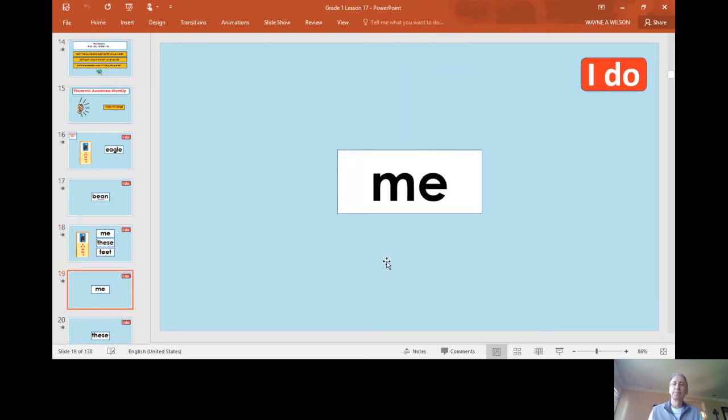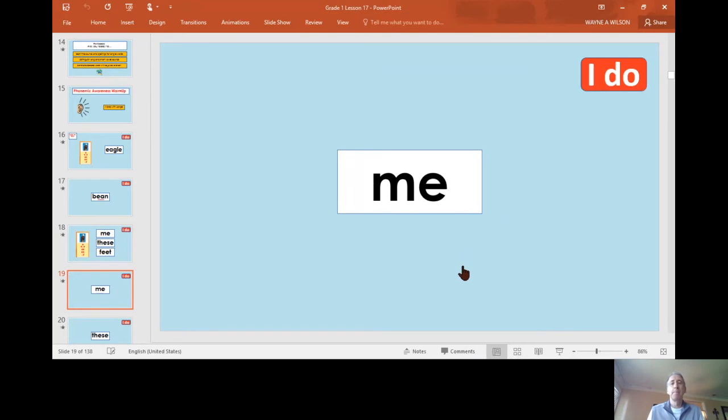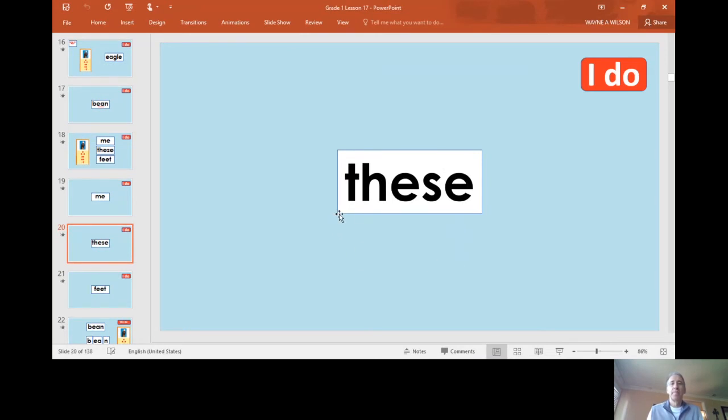Here's the word me. Me, me, the long E sound. We have these. T-H-E-S-E. When you have the E consonant and the other E, this is going to be a silent E. So, these. These, as in these pictures. How about this one? F-E-E-T. Feet. I hope you don't have smelly feet.